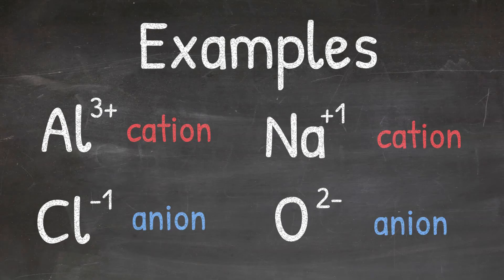Simply put, whether it has a positive or negative charge will help you determine whether or not it is a cation or an anion. Now you know how to identify a cation and an anion.